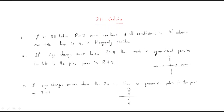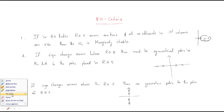The first point: if in the RH table, a row of zeros (ROZ) occurs one time and all coefficients of the first column are positive, then the system is marginally stable. So if we get a row of zeros only one time, the system is called marginally stable.